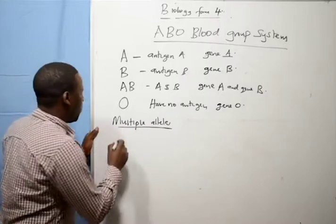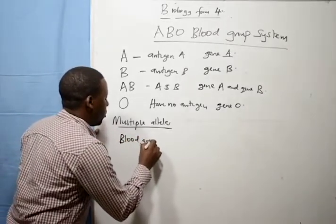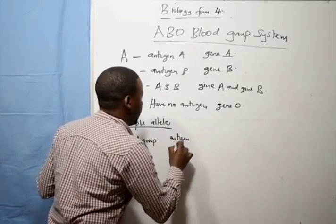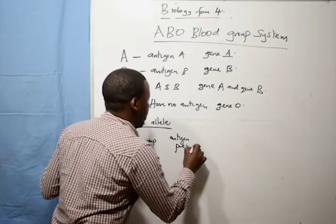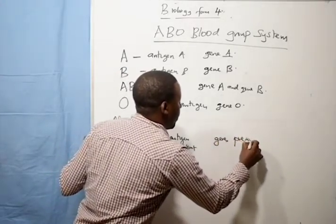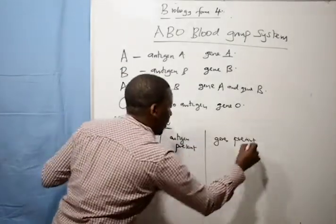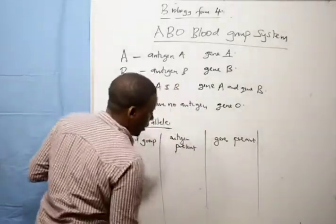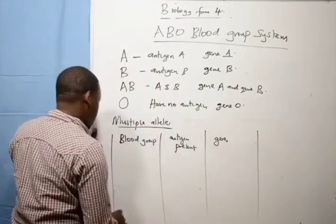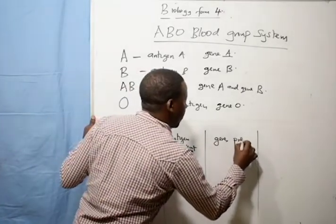We can present this information in a table showing blood group, antigen present, and genes present.